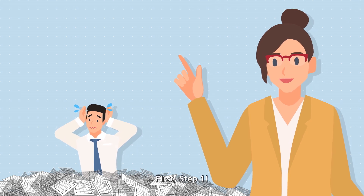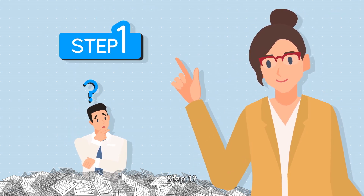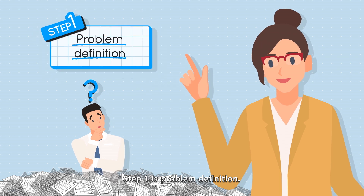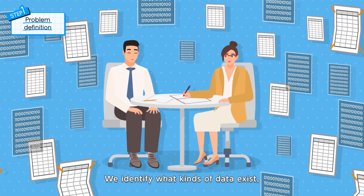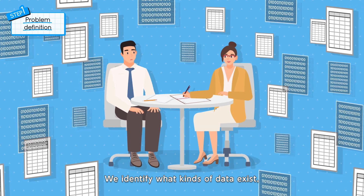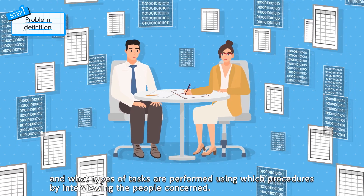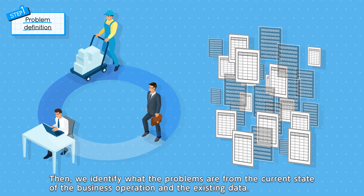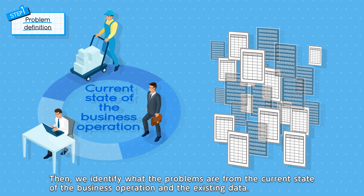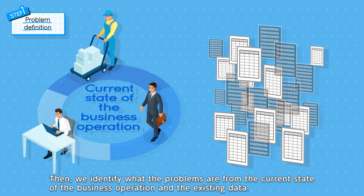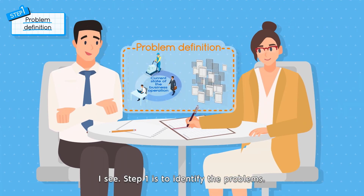Leave it to us. First, step one. Step one is problem definition. We identify what kinds of data exist and what types of tasks are performed using which procedures by interviewing the people concerned. Then, we identify what the problems are from the current state of the business operation and the existing data. I see. Step one is to identify the problems.